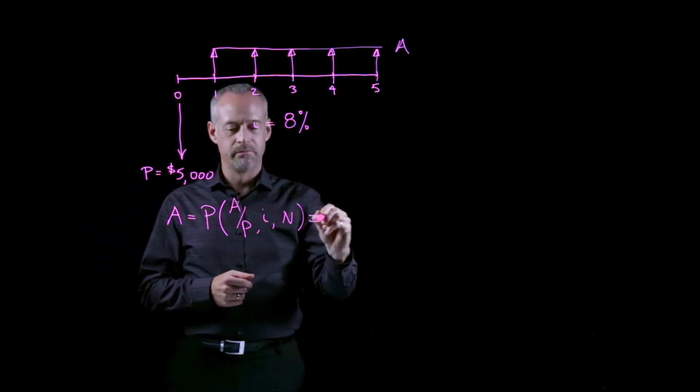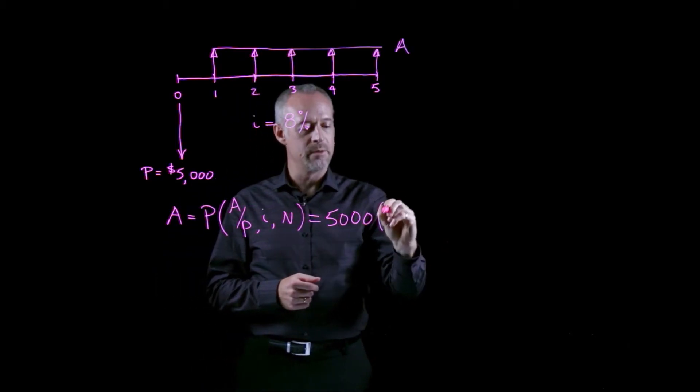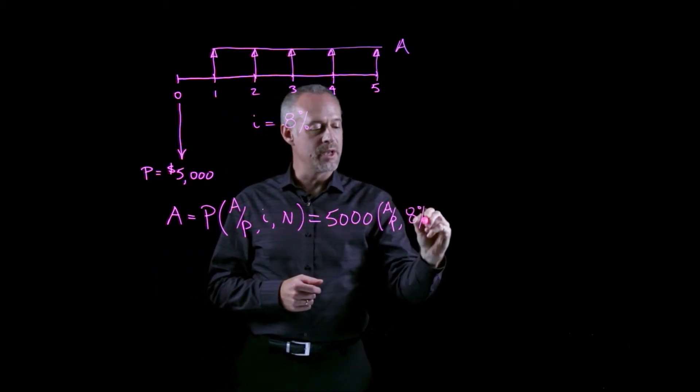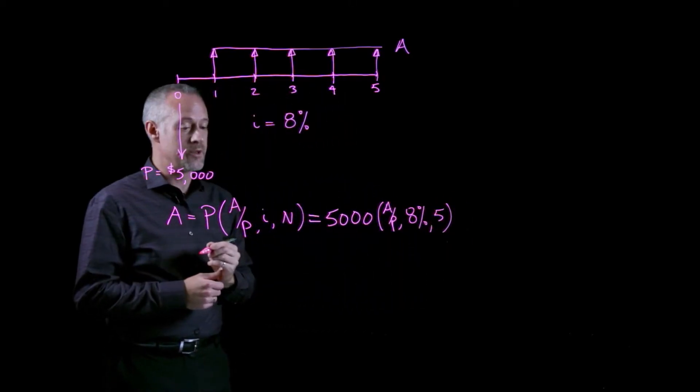And in this problem these numbers would be 5,000 times A given P for an interest rate of 8% and 5 time periods or in this case 5 years.